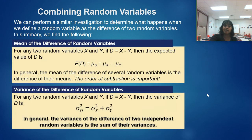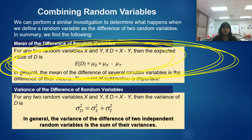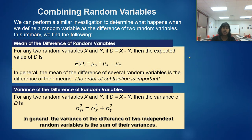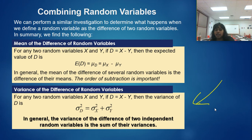What happens when we have a difference? The only major change is the mean: if you're summing, the means add; if you're differencing, the means subtract. But notice the variance stays the same — variance is still added together. Please note that in general the variance of two independent variables will be the sum, whether you're subtracting or adding.